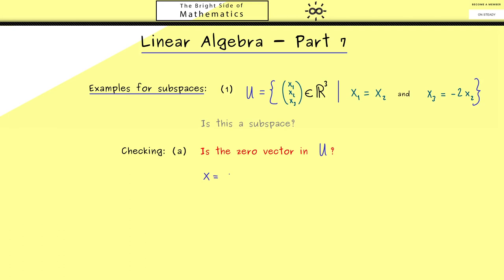Therefore, let's take the zero vector and check if all the equations on the right-hand side are fulfilled for it. We need that x₁, x₂, and x₃ are all zero. Then obviously we can immediately conclude that x₁ is equal to x₂. In other words, the first equation is satisfied. To check the second equation, we immediately see that minus 2x₂ is also zero, and therefore it's simply equal to x₃.